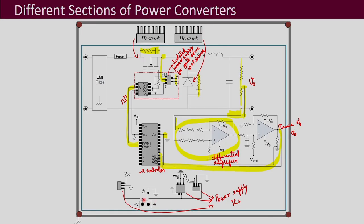If you have a large or high-power converter, multiple PCBs can be used for different parts of the circuit. The V-plus and V-minus supply for the power supply ICs can be obtained from the input voltage Vin itself by stepping it down, or it can be taken from another single-phase source using an adapter. There are different ways of obtaining this V-plus and V-minus.